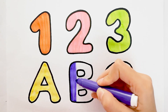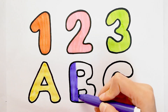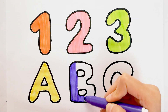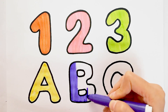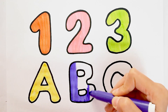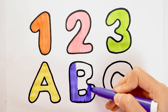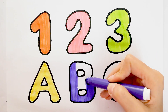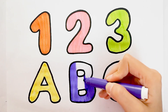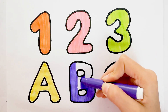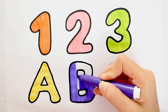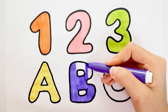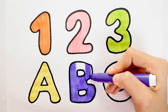A, B, C, D, E, F, G, H, I, J, K, L, M, N, O, P, Q, R, S, T, U, V, W, X, Y, and Z. Now I know my ABCs, next time won't you sing with me?